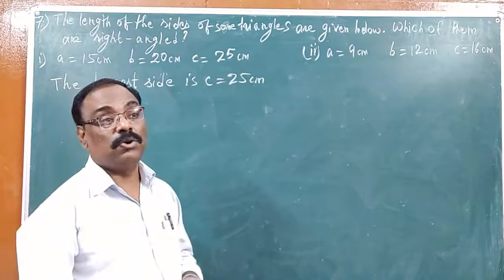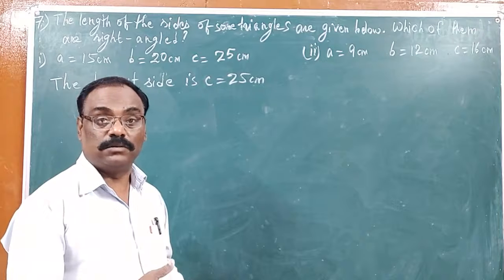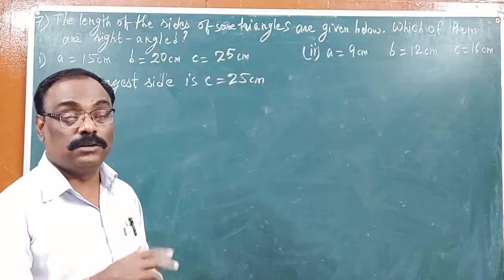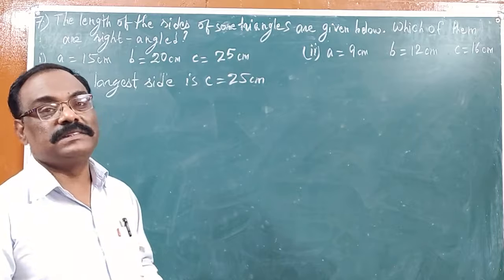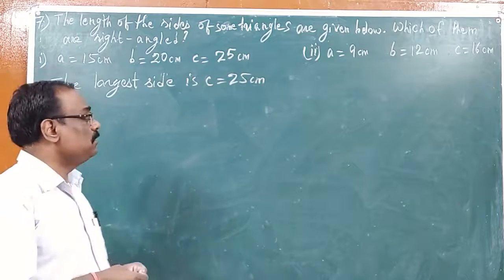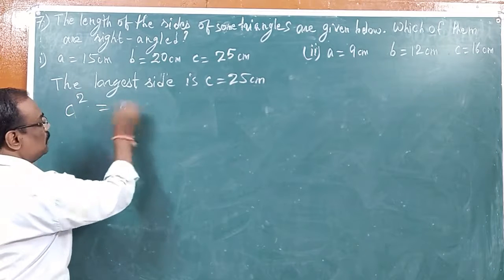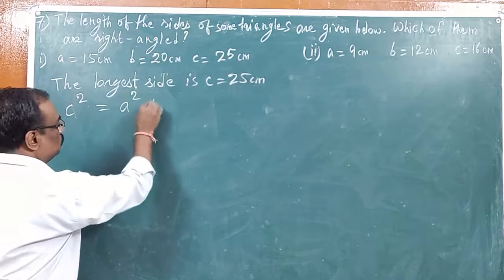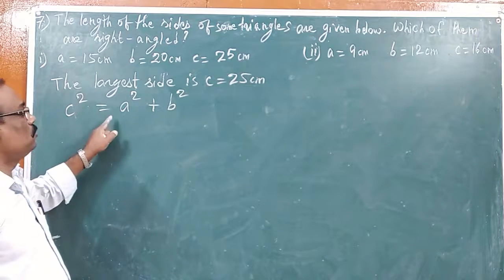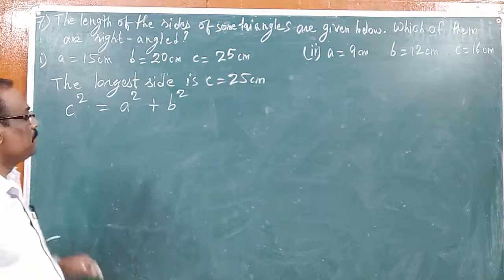Now, if we do the square of the largest side and get the answer, whatever the answer of the square of the largest side comes, and we get the sum of the squares of the other two sides equal, then we will say that triangle is a right triangle. So here, the largest side is C. If C square is equal to A square plus B square, and both are equal, then we will say it is a right triangle.